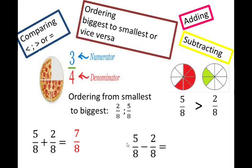The same goes for subtraction of fractions. Ensure that your denominators are both the same. Once we know that our denominators in both fractions have the same number, we concentrate only on the numerator: 5 and 2. 5 minus 2 is 3, so 5 eighths minus 2 eighths is 3 eighths. Just like addition, we only subtract the numerator. In subtraction we only subtract the numerator. The denominators must stay the same as the denominators in the sum.